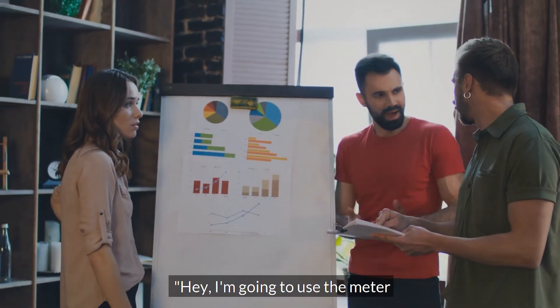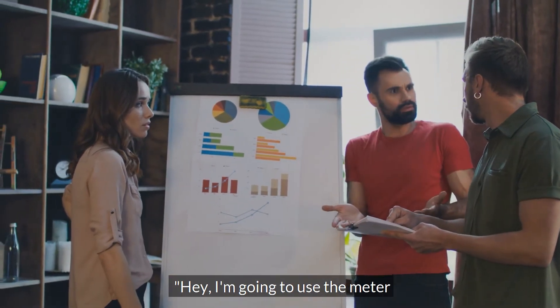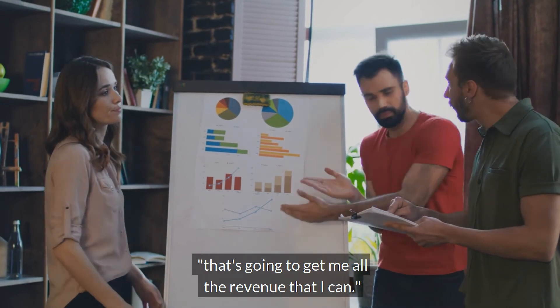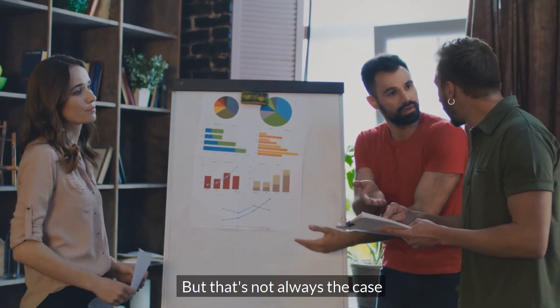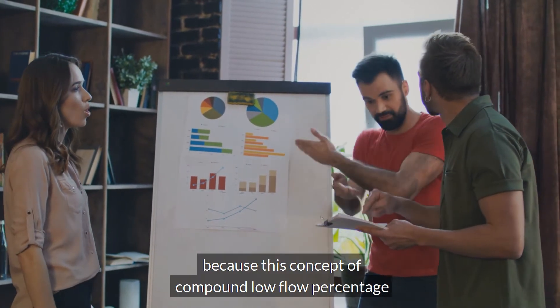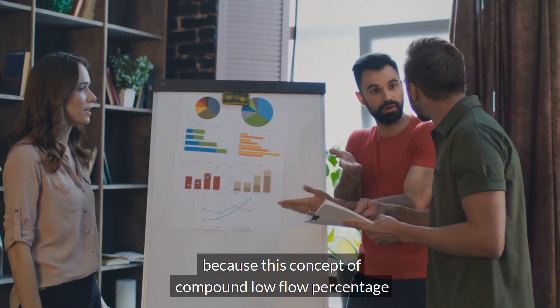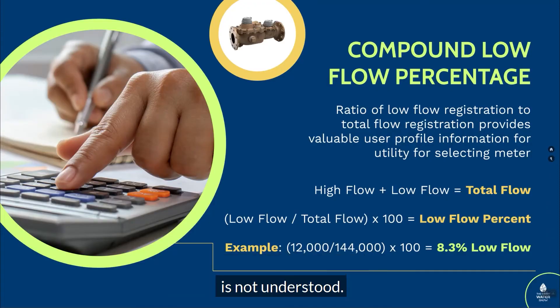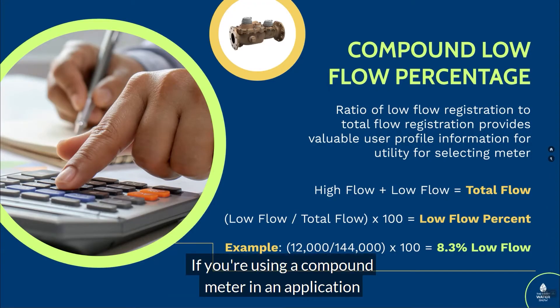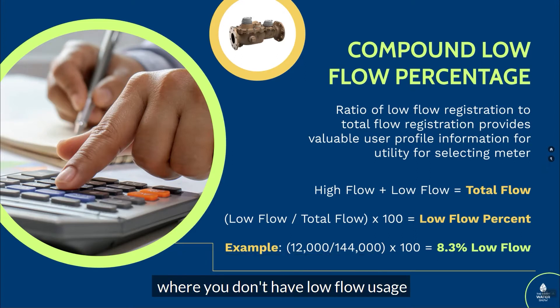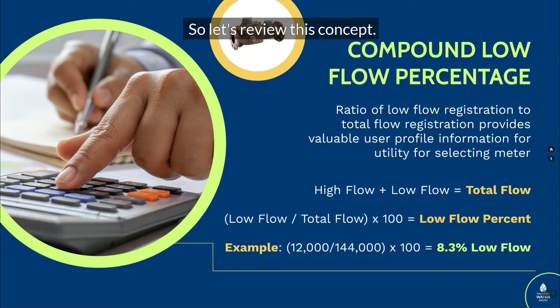But there are other utilities that feel correct in the fact that they use compounds everywhere. Their thought is that they're going to use the meter that's going to get them all the revenue they can. But that's not always the case because this concept of compound low flow percentage is not understood. If you're using a compound meter in an application where you don't have low flow usage, you're misusing or misapplying that meter.